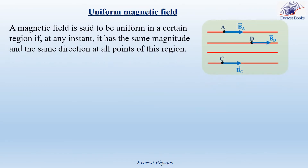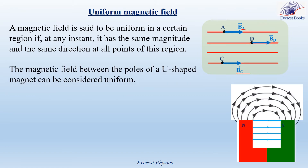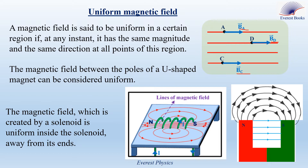Uniform magnetic field: a magnetic field is said to be uniform in a certain region if at any instant it has the same magnitude and the same direction at all points of that region. Pay attention: uniform magnetic field means it is constant with position but not necessarily constant with time. Examples include the magnetic field between the poles of a U-shaped magnet, and the magnetic field created by a solenoid, which is uniform inside the solenoid and away from its ends.